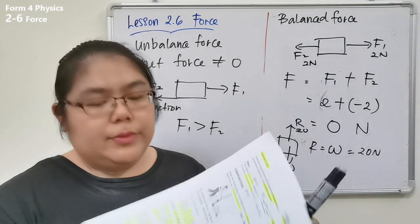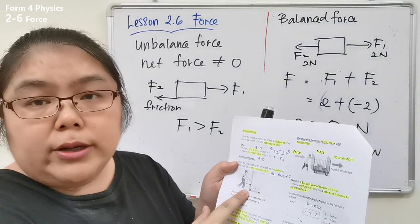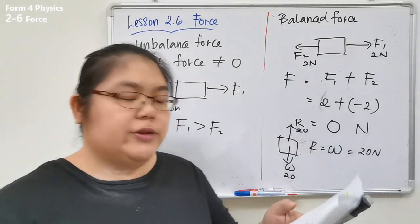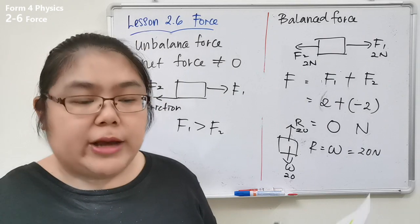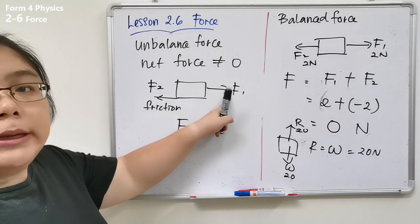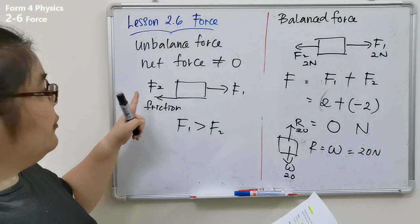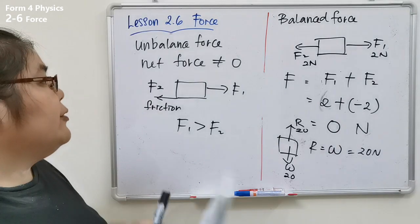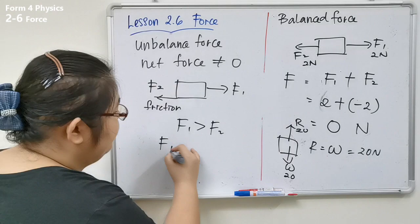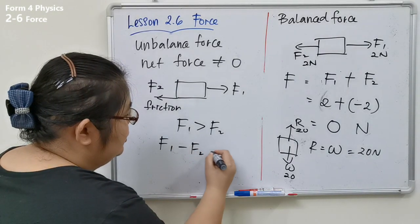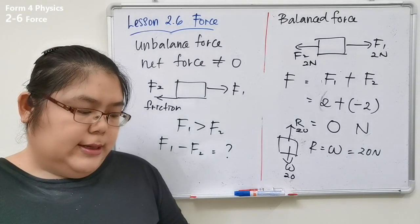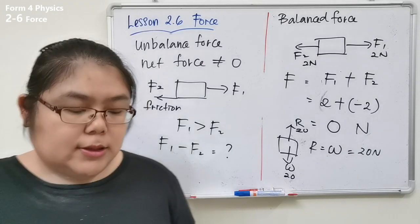The diagram shows a boy pulling a box on a trolley — an example of unbalanced force. The net force = force applied minus the resistance (friction). So net force = F1 − F2, giving a non-zero answer. This is what we call net force.